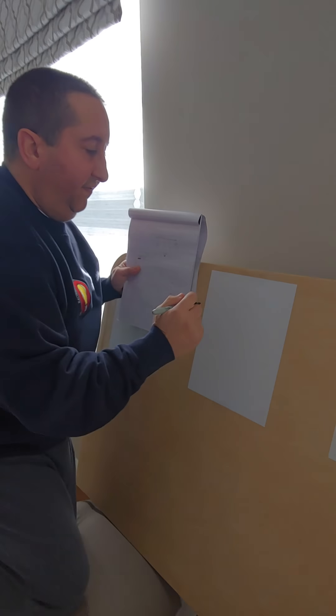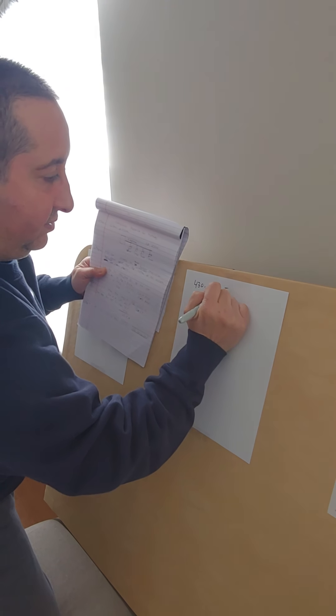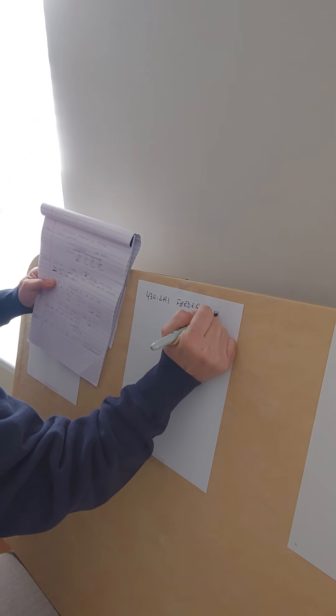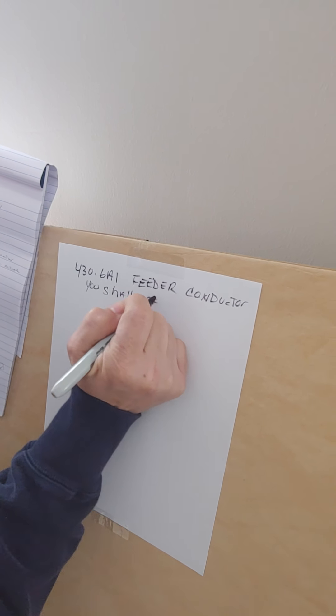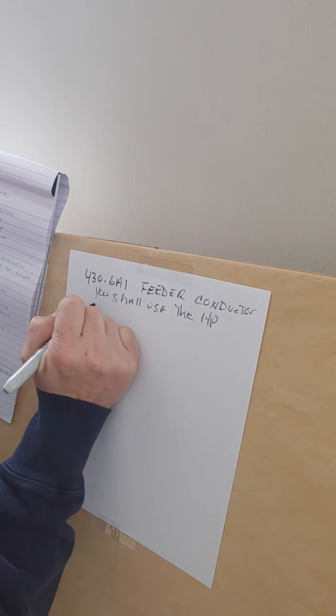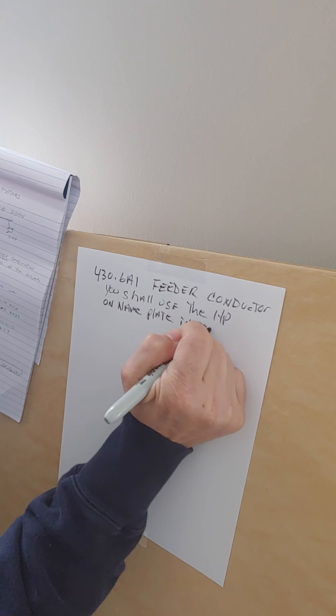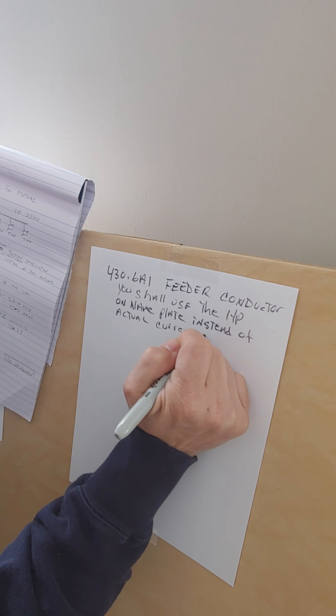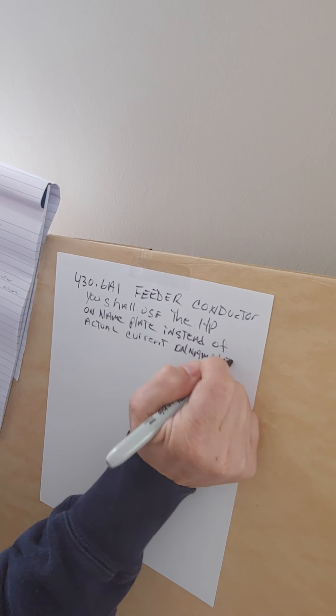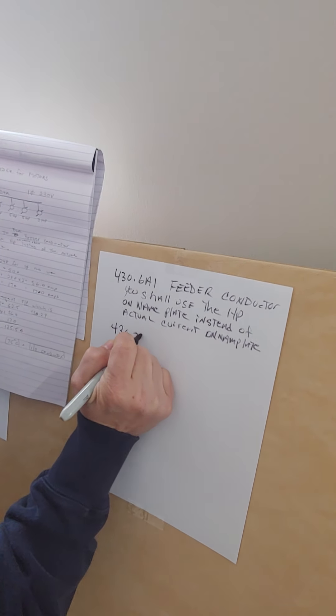Step two is go to 430.6A1 in the code, which is the 2014 code we're on right now. It states that for a feeder conductor, you shall use the horsepower on nameplate instead of actual current on nameplate.